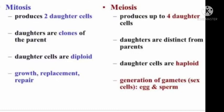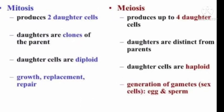Distinguish between mitosis and meiosis. Let us see what is the exact difference between them. In mitosis, two daughter cells are produced, whereas in meiosis, they produce up to four daughter cells. In mitosis, daughter cells are clones of the parent - they are identical. Whereas here, daughter cells are different from parent cells. In mitosis, daughter cells are diploid, whereas here in meiosis, they are haploid. And in mitosis, the daughter cells perform growth, replacement, and repairing. Whereas in meiosis, generation of gamete cells - that is sex cells. Example: egg cells and sperm cells. That's why you get 50% characters from your mother and 50% character from your father.